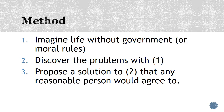All social contract theories share a method in common. You're supposed to imagine life without some kind of government or without a moral code. You don't have to actually say that this ever happened or that anyone ever actually lived this way. Sometimes these theories are misunderstood as saying, 'once upon a time there were no rules at all, and then people had to make them.' That's probably not exactly true. Instead, what you do is imagine life without some sort of government or moral rules, using everything you know about the way people are and about life in general, and then you can discover some of the problems.